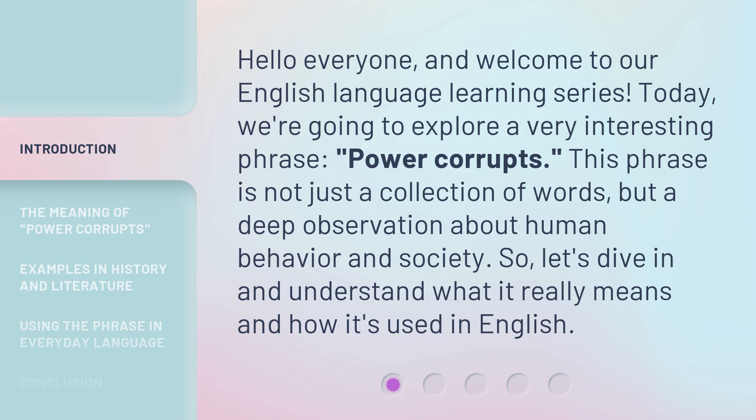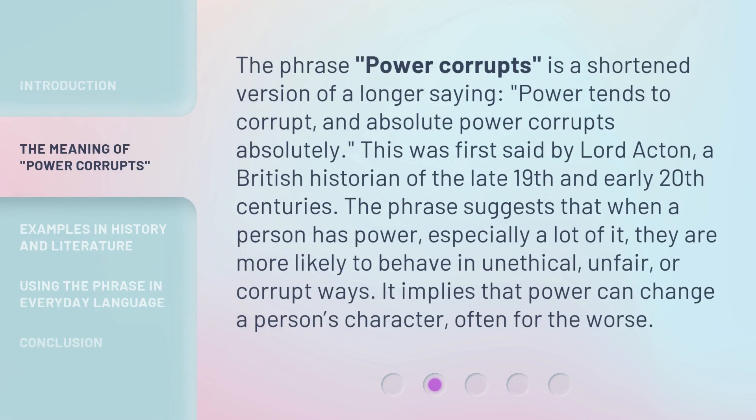So, let's dive in and understand what it really means and how it's used in English. The phrase power corrupts is a shortened version of a longer saying: Power tends to corrupt, and absolute power corrupts absolutely.